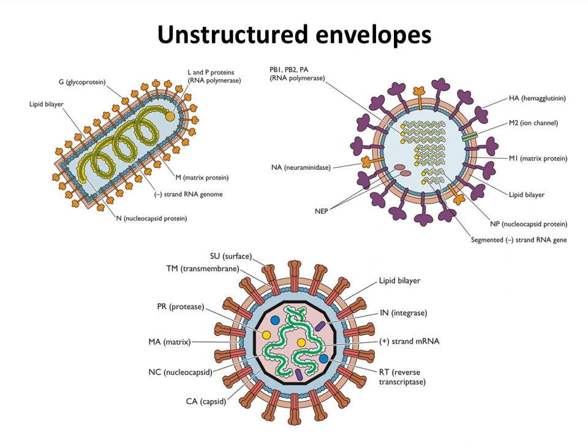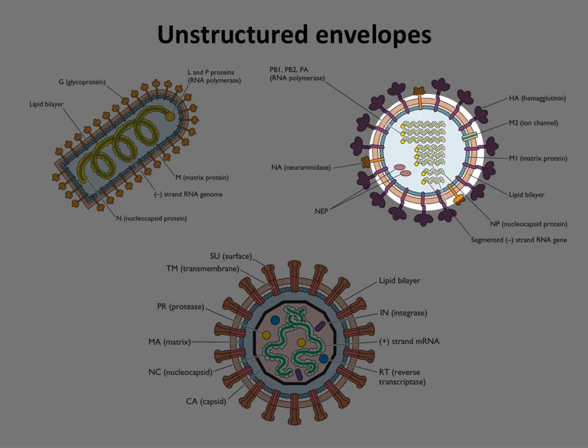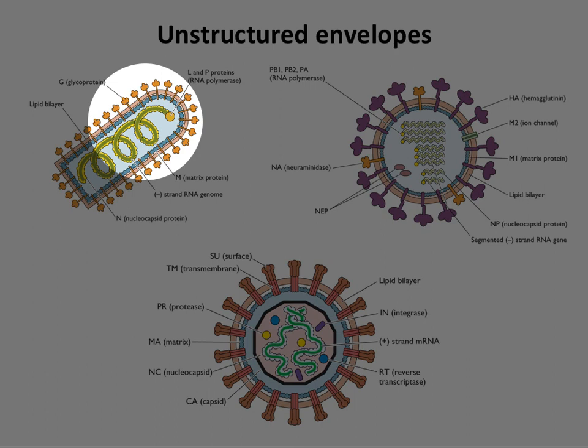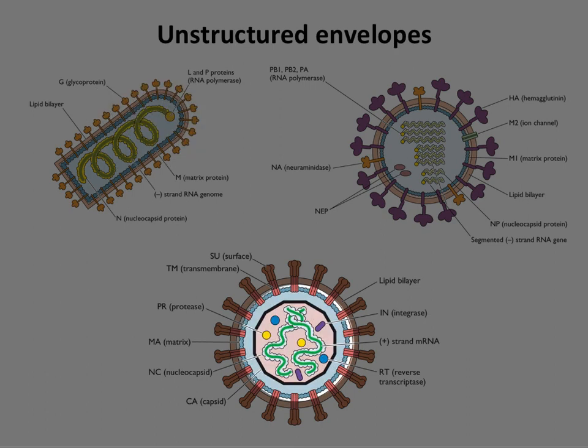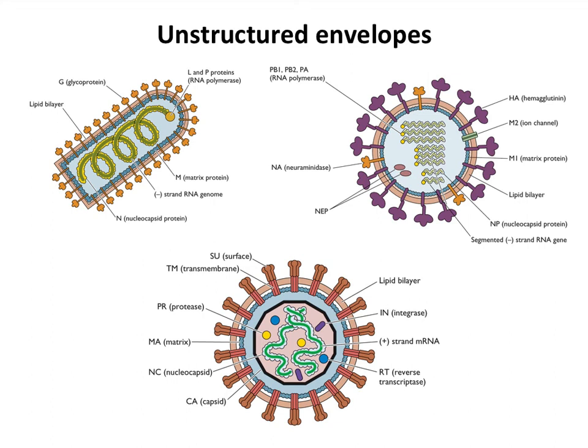Many virions are not structured. Influenza virus, rabies virus, and retroviruses are examples where the glycoproteins float in the lipid envelope and don't have any structure whatsoever — they just look like a sea of spikes. That is because they're not being aligned by any underlying symmetry; they're simply around a nucleocapsid.